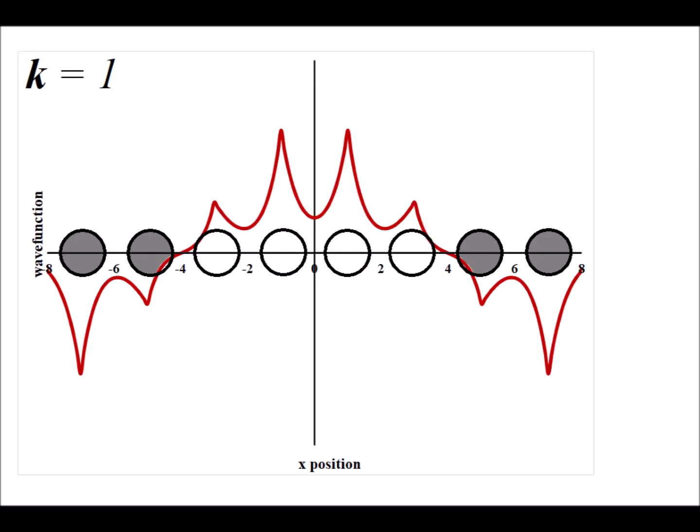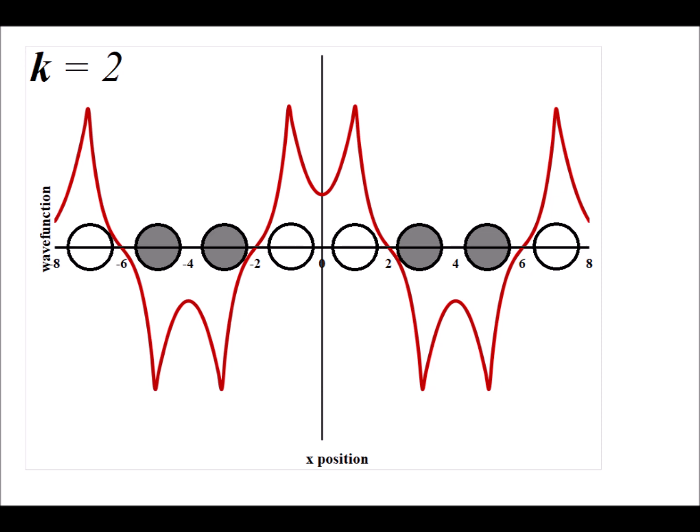For k is equal to 1, we notice we have a more complicated molecular orbital. If we interpret the phases, the left two and the right two most atoms have their 1s orbitals in the negative phase, whereas the other four have a positive phase. For k is equal to 2, we have a situation where the second, third, sixth, and seventh atoms have a negative phase, shown in dark gray, and the other four atoms have a positive phase. Remember, if we have the same phase next to each other, we have a bonding interaction; if we have opposite phases, we have an anti-bonding interaction.